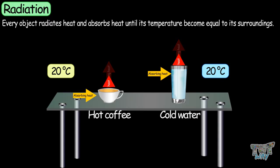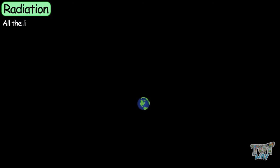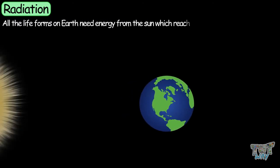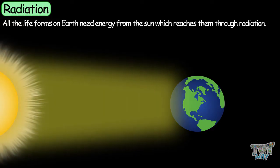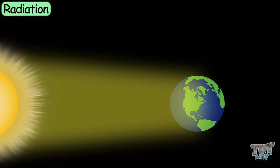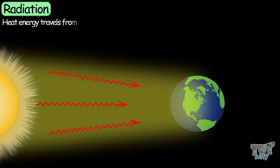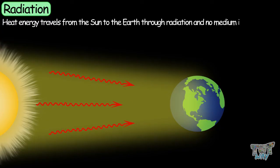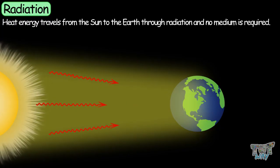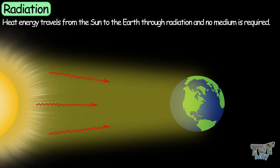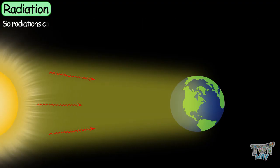All life forms on Earth need energy from the Sun, which reaches Earth through radiation. Heat energy travels from the Sun to the Earth through radiation — sunlight reaches us and no medium is required. So radiation can travel even in a vacuum.